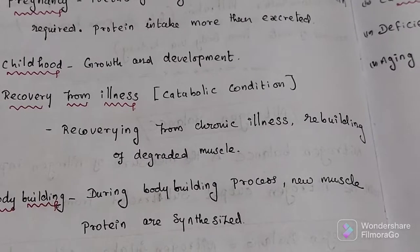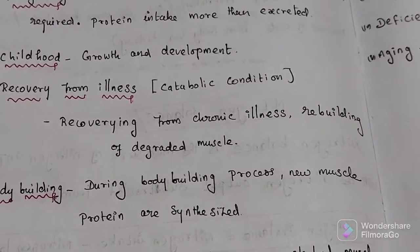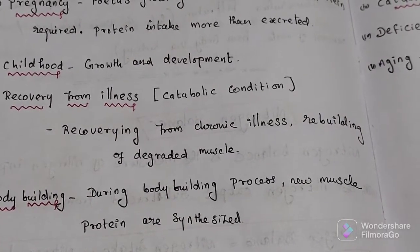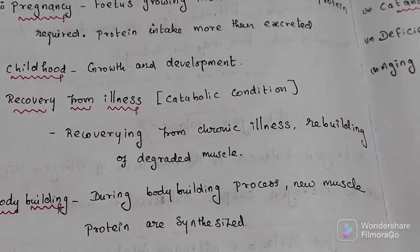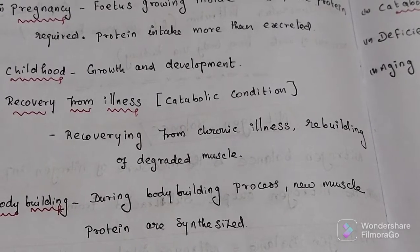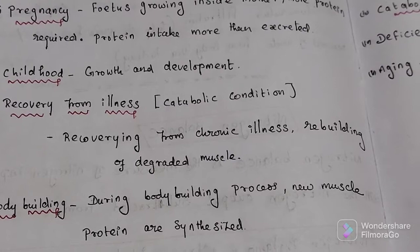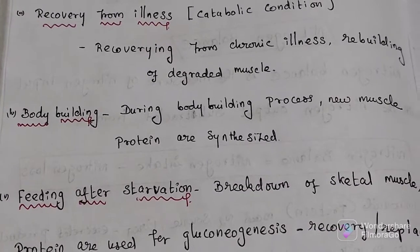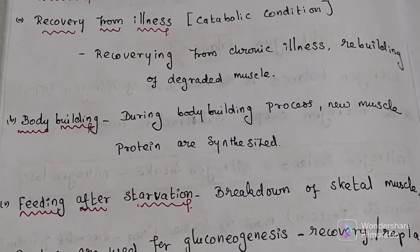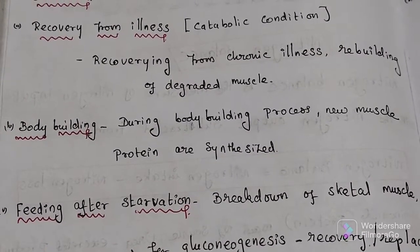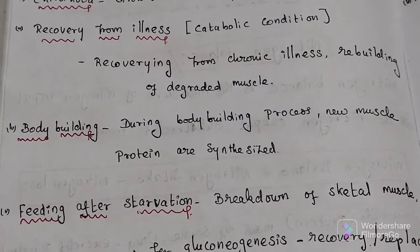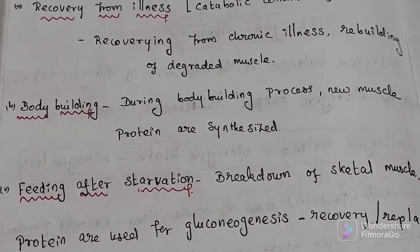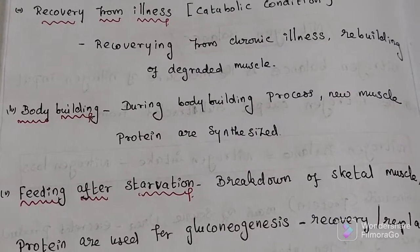The third condition is recovery from illness. Illness is a catabolic condition where muscle proteins are broken down. When a person is recovering from chronic illness, rebuilding of those degraded muscles occurs, meaning the amount of protein coming in is greater than the nitrogen being excreted. The fourth condition is bodybuilding — during this process, new muscle growth occurs and muscle proteins are synthesized, so it is positive nitrogen balance. Bodybuilders take in more protein and excrete less urea.